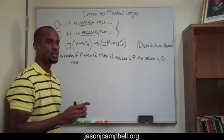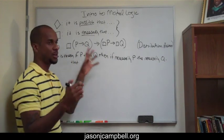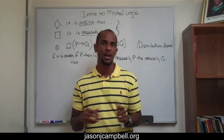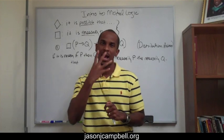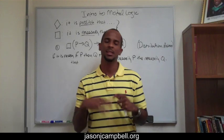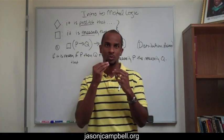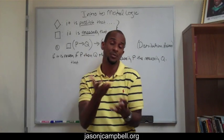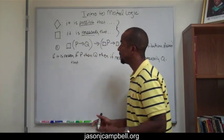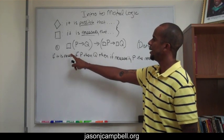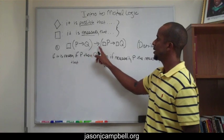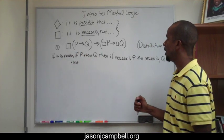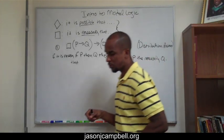If you're trying to read modal logic, sometimes you look in books and all you see is squares and arrows and P's, and it doesn't make any sense. One of the things I did way back when I was learning modal logic is to make sure I understood how to sound it out. Once you know how to say the symbols, the logic starts to sound right. So this is read: if it is necessary that if P, then Q, then if necessarily P, then necessarily Q. This is one of the foundational axioms of modal logic, known as the distribution axiom.